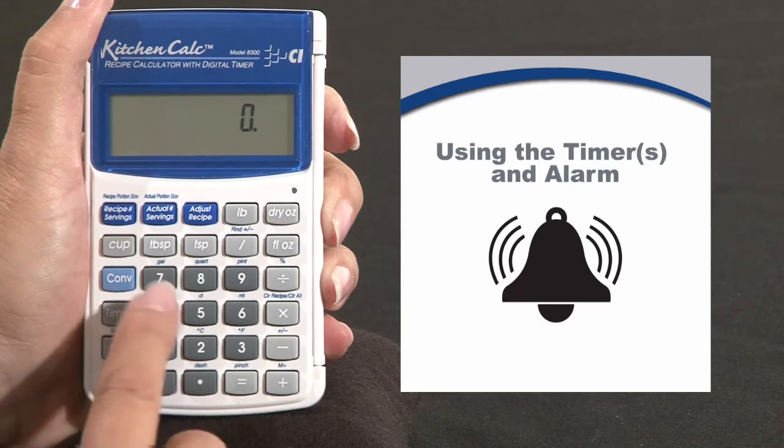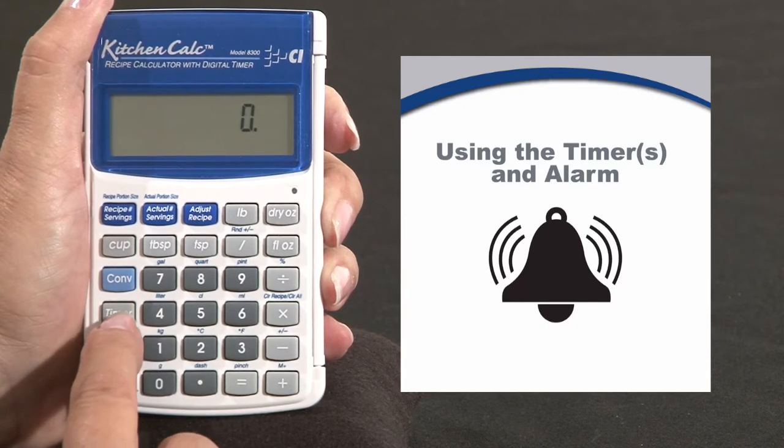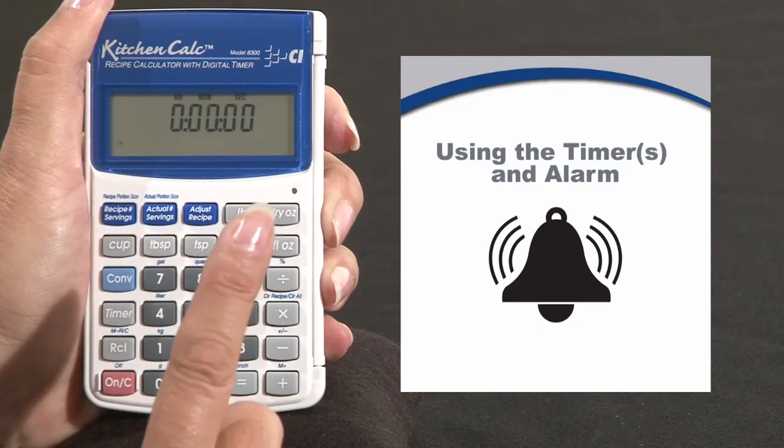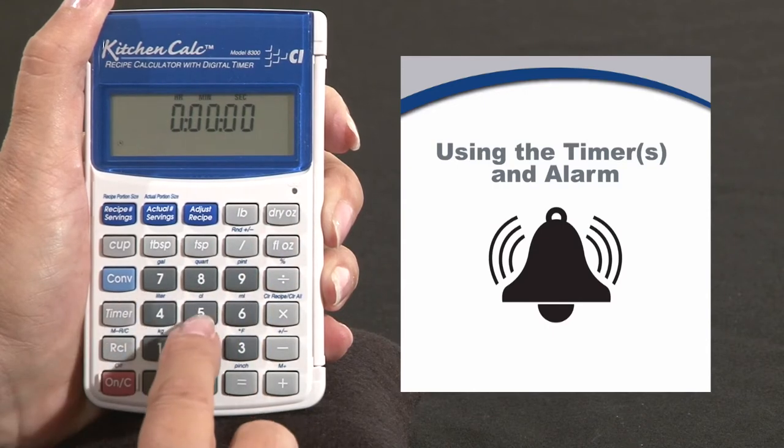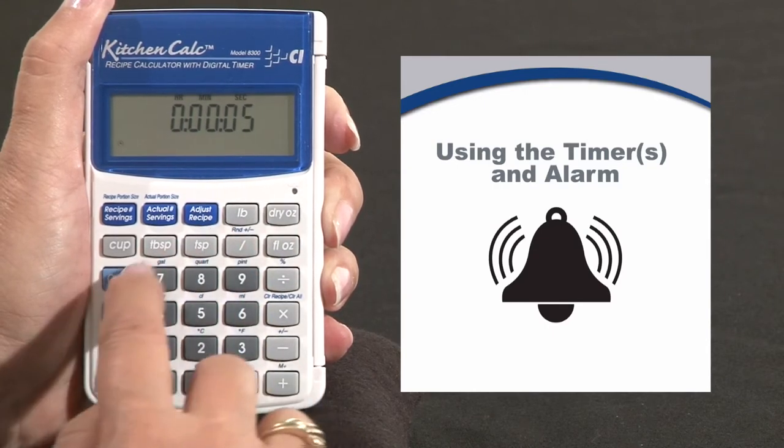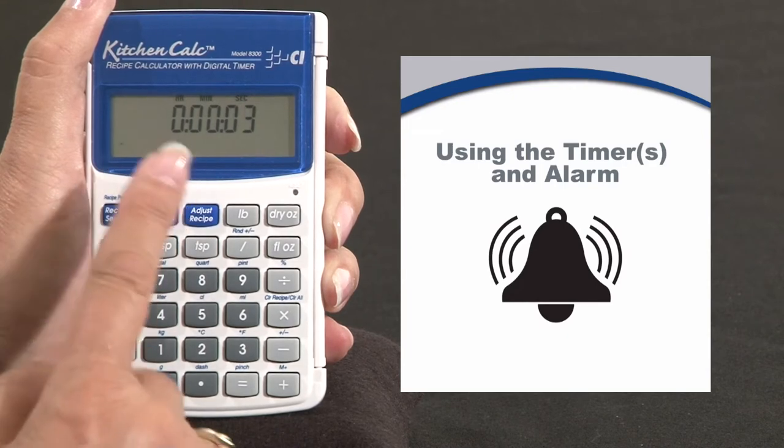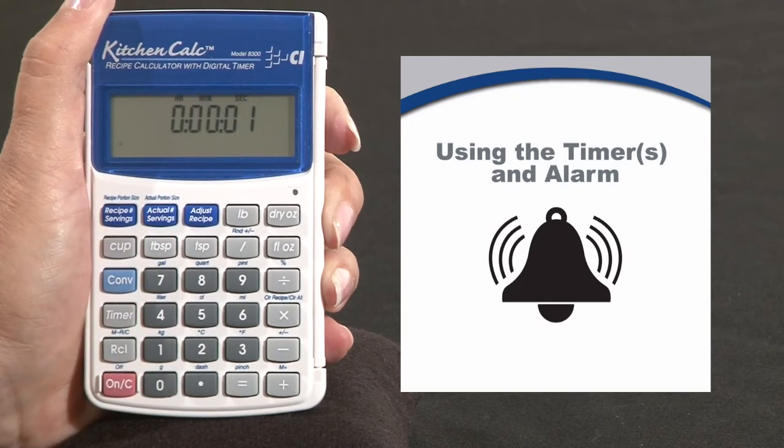With the handheld or the countertop, all you have to do is press timer and then you enter the time of your recipe. We'll do a short one and press five seconds. You can see that the calculator is counting down, the timer is.